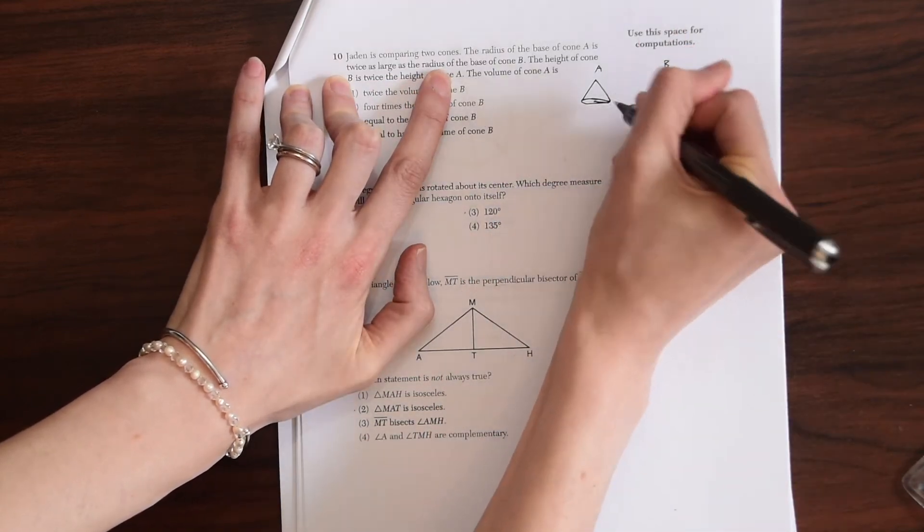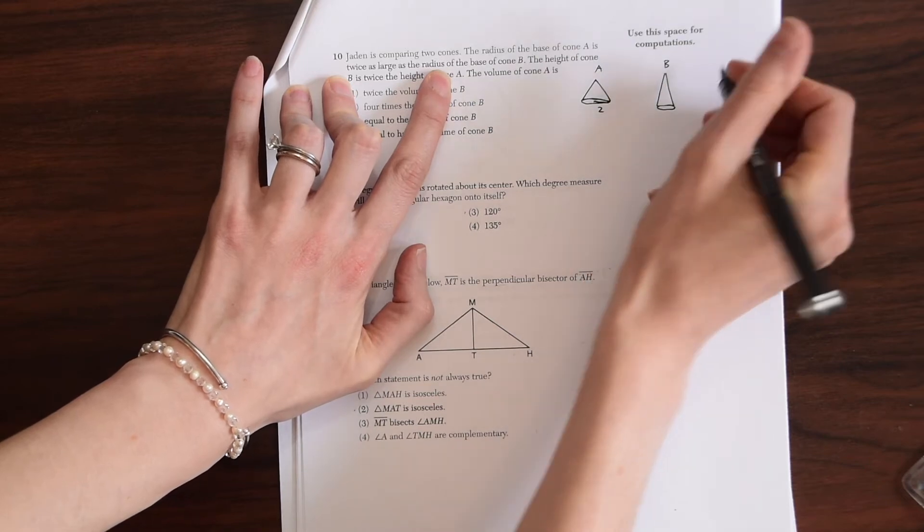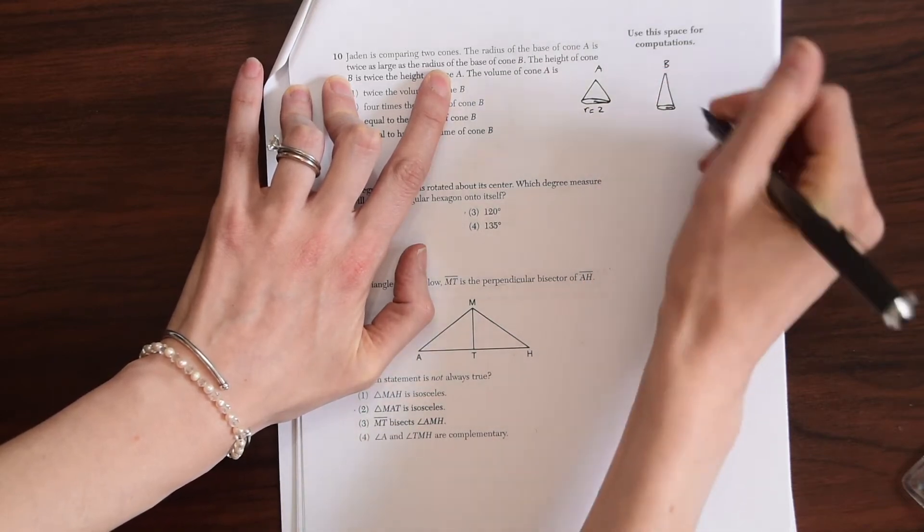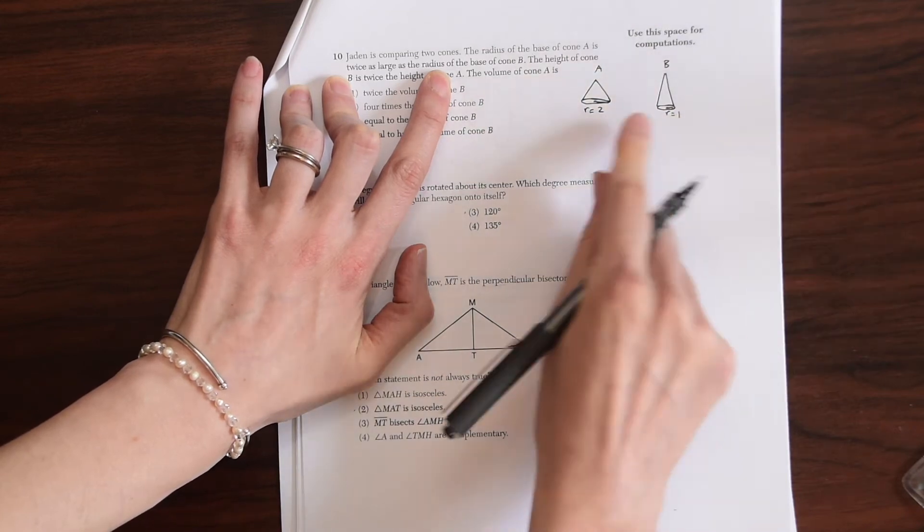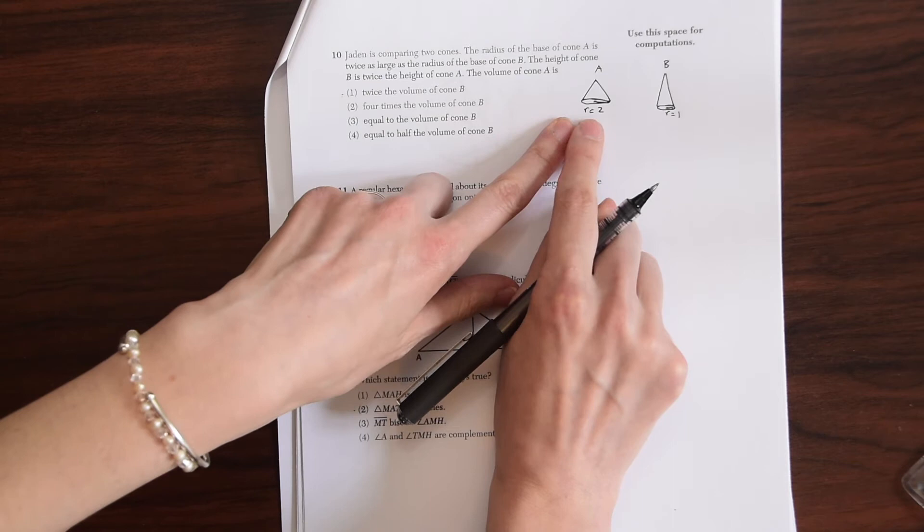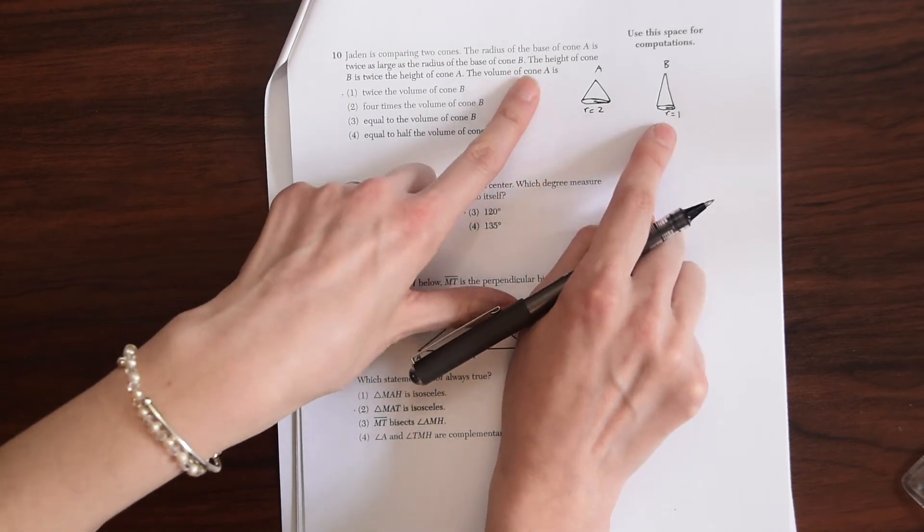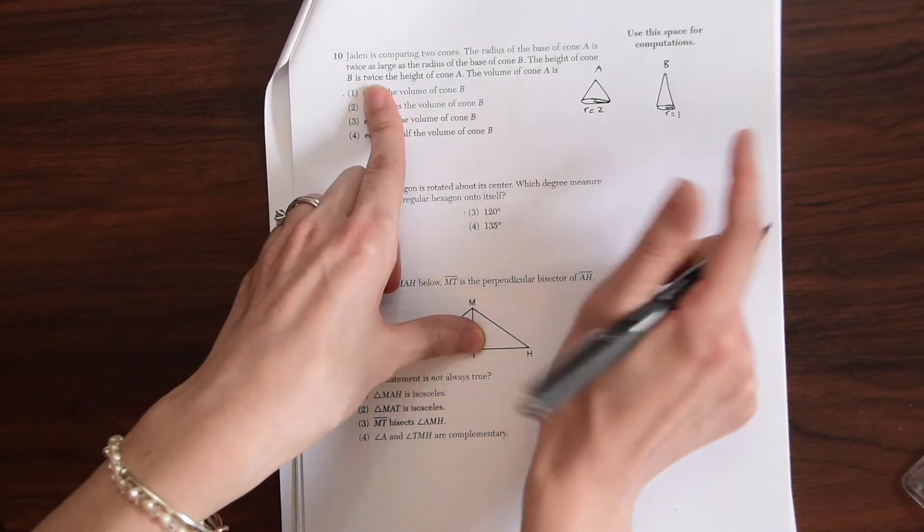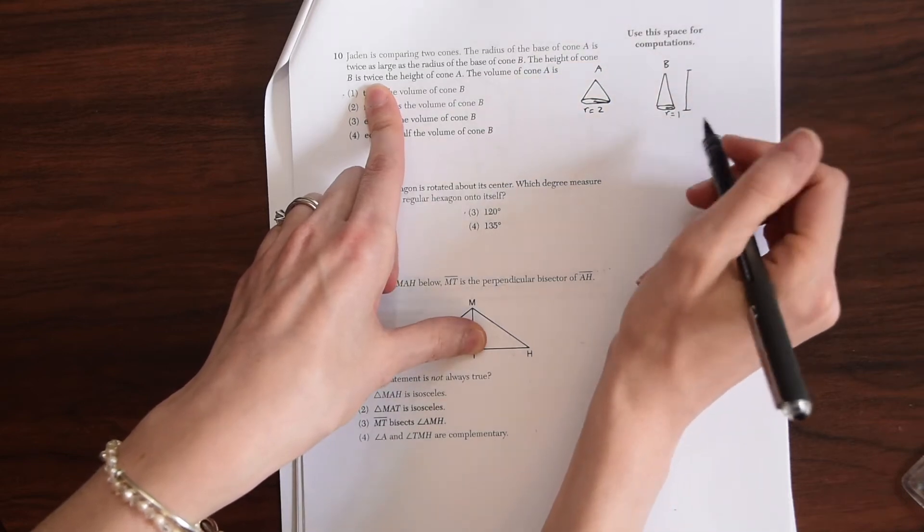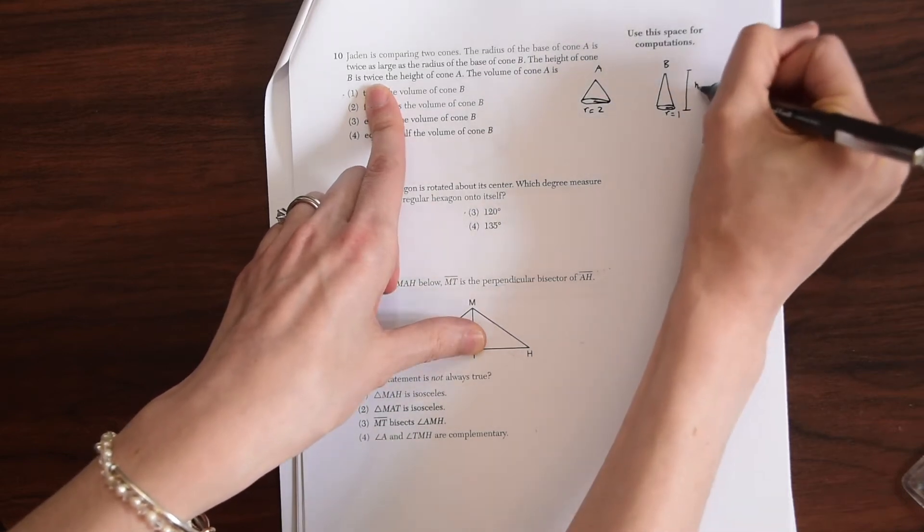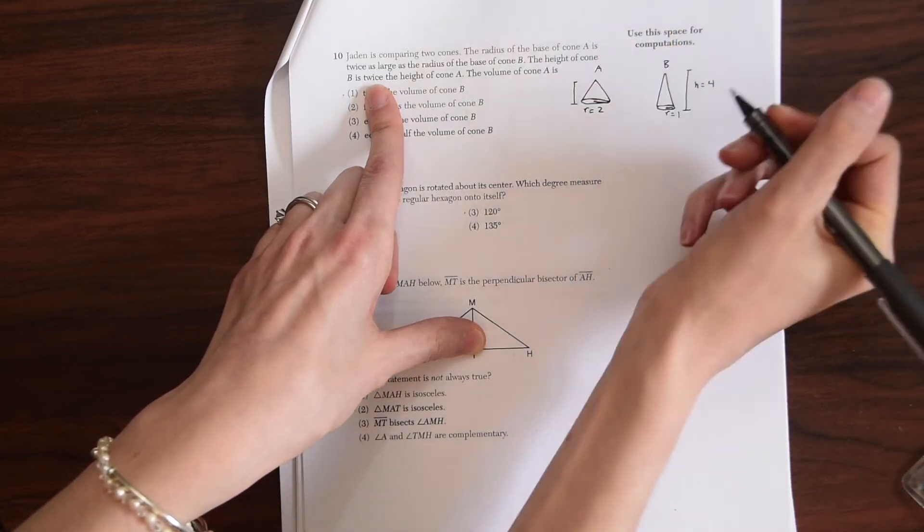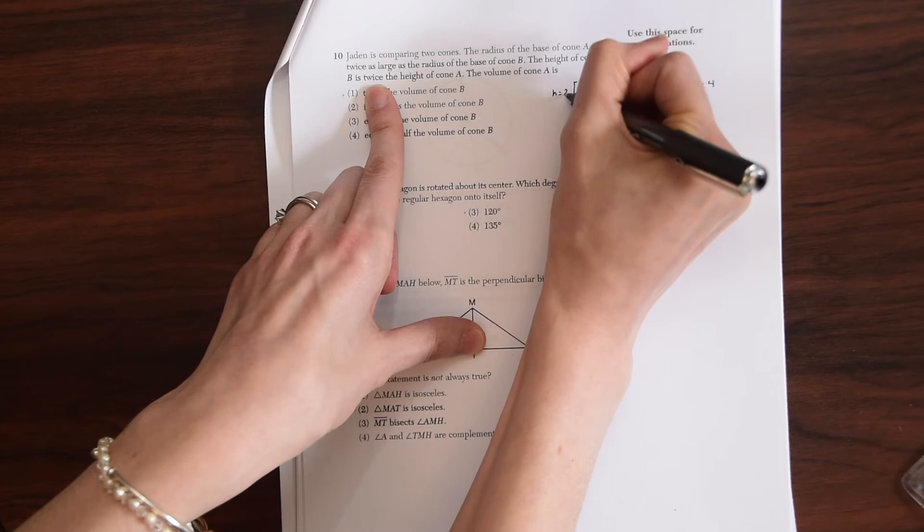So the base of cone A is twice as large as the radius of the base of cone B. So let's say the radius right here is two and it's twice where R is two here. And then here we're going to say R is equal to one because the base of cone A is the radius is twice as large as B and the height of cone B. So now we have the height of cone B is twice the height of cone A. So what if we say the height here is equal to four? And then here we're going to say it's half of that, which is equal to two.